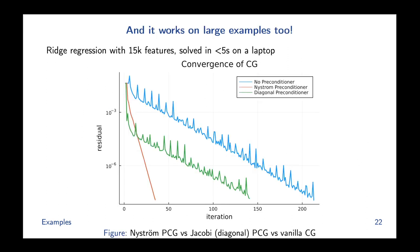For a slightly bigger dataset, returning to the teaser shown earlier: ridge regression with 15,000 features is solved in under five seconds on a laptop using the Nystrom preconditioner with sketch size 500. This performs significantly better than using no preconditioner or the diagonal preconditioner.